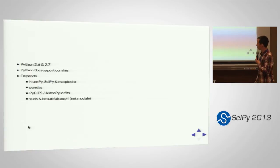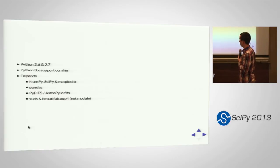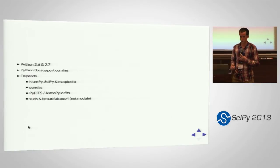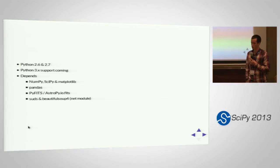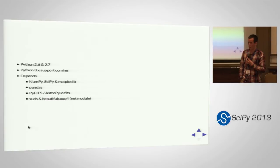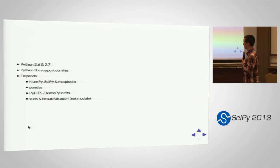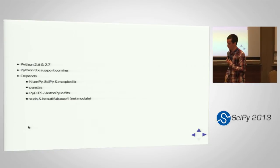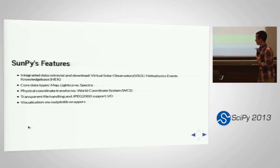We currently support Python 2.6 and 2.7, though I tried my hardest to break 2.6 with the last pull request I put in. We'll try to get Python 3 working — there's no real reason why we can't. We have a reasonably standard set of dependencies: NumPy, Matplotlib, and SciPy you need to import the package, and probably pandas as well. We also use suds and Beautiful Soup 4 for our VSO module.